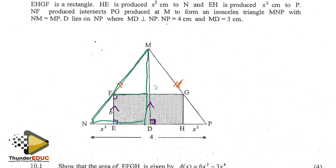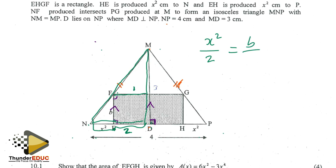If this total distance is 4, then just this section alone is going to be 2, and if that is 2 then this is 1. So I'm going to say x squared divided by the total, which is 2, is equal to line b over the total, which is 3, because they told us that total distance is 3.